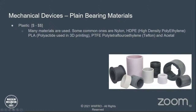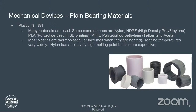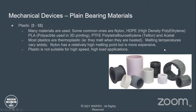Plastic bushings are less expensive and come in many materials. Common ones include nylon, HDPE (high-density polyethylene), PLA (polylactide, used in 3D printing), PTFE (polytetrafluoroethylene — DuPont's brand is Teflon), and acetal, which is a fairly hard plastic. Most plastics are thermoplastic, meaning they melt when heated — melting temperatures vary widely, with nylon having a relatively high melting point. Plastic is not suitable for high-speed and high-load applications, because those tend to cause heat, which does not go well with plastic.